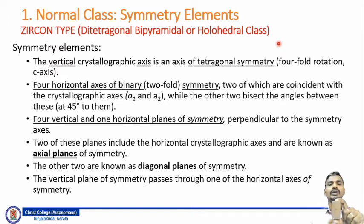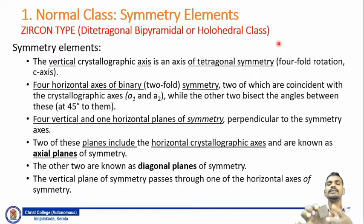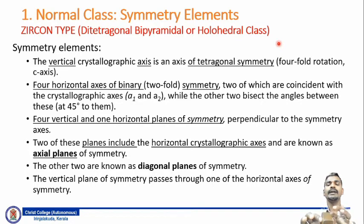The crystal also possesses four horizontal axes of two-fold symmetry. I can hold the crystal diagonally or from face to face. Holding it diagonally with respect to the horizontal crystallographic axis and rotating 360 degrees, you can see that similar faces repeat twice — one time and two. Similarly, holding the other horizontal crystallographic axis a2, similar faces also repeat twice when rotated 360 degrees. Holding it face to face again yields two similar faces, confirming two-fold or binary symmetry.